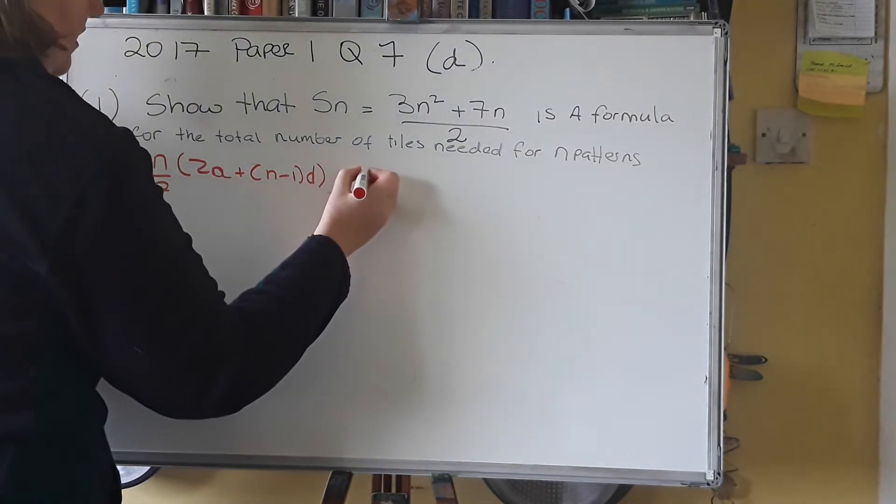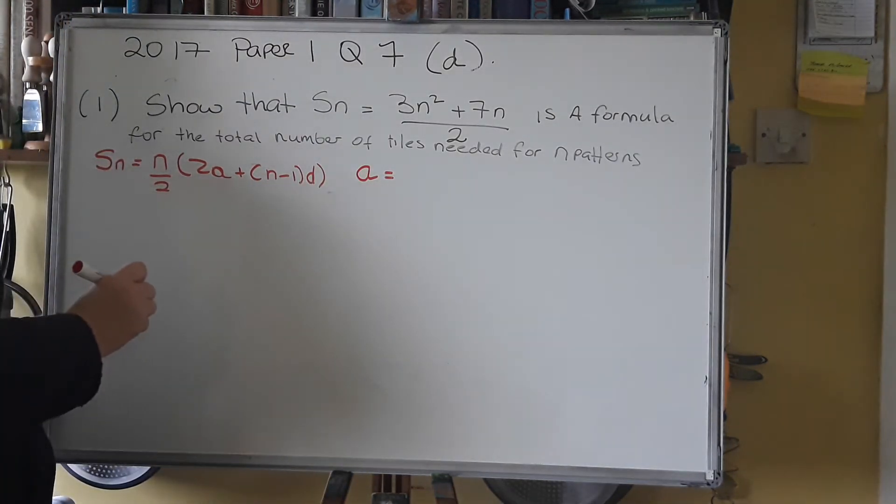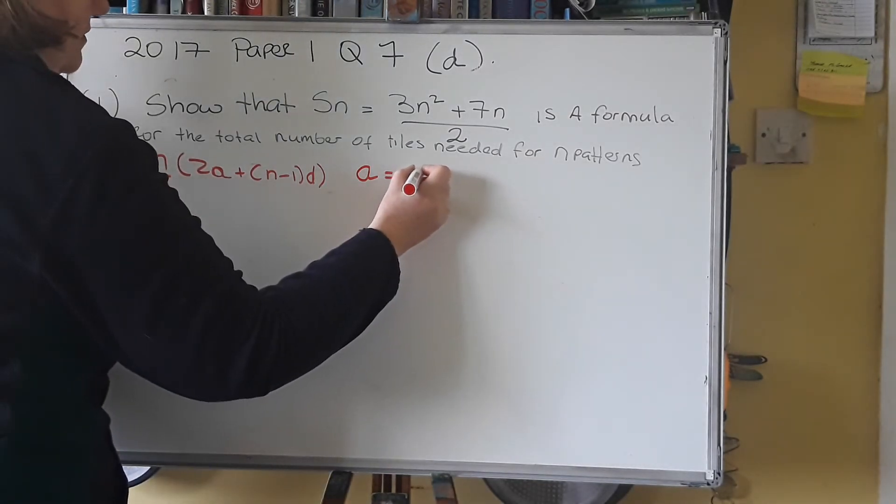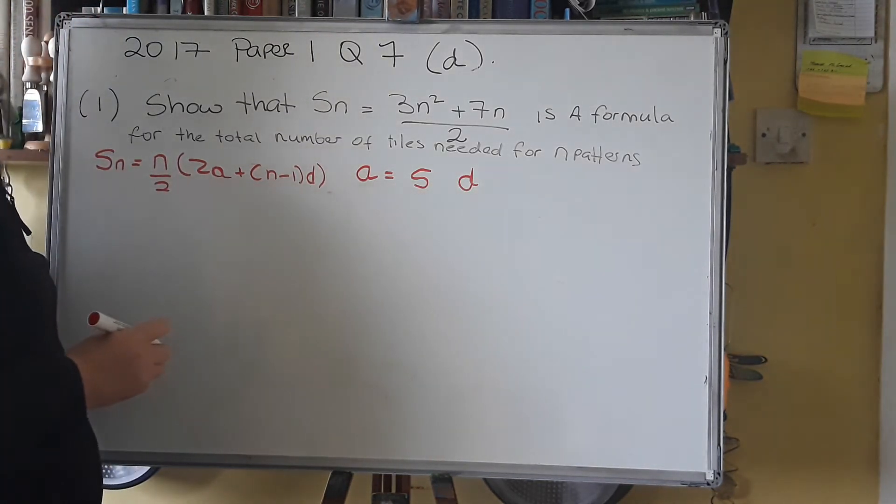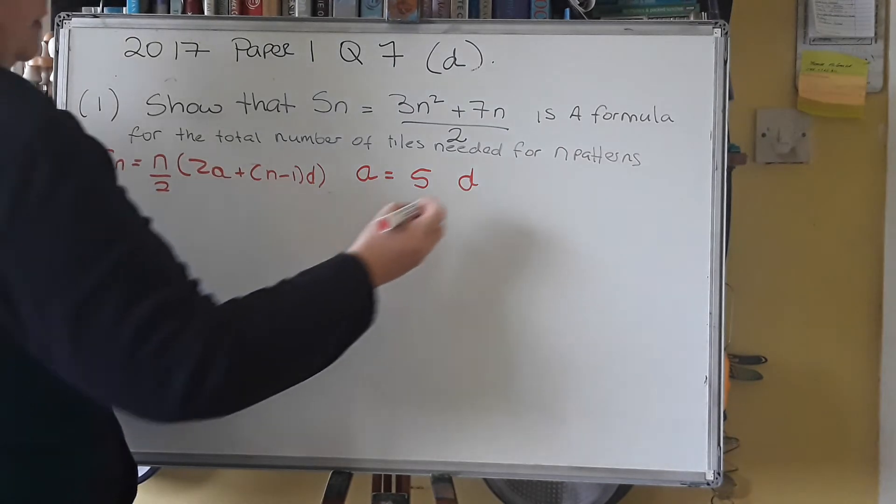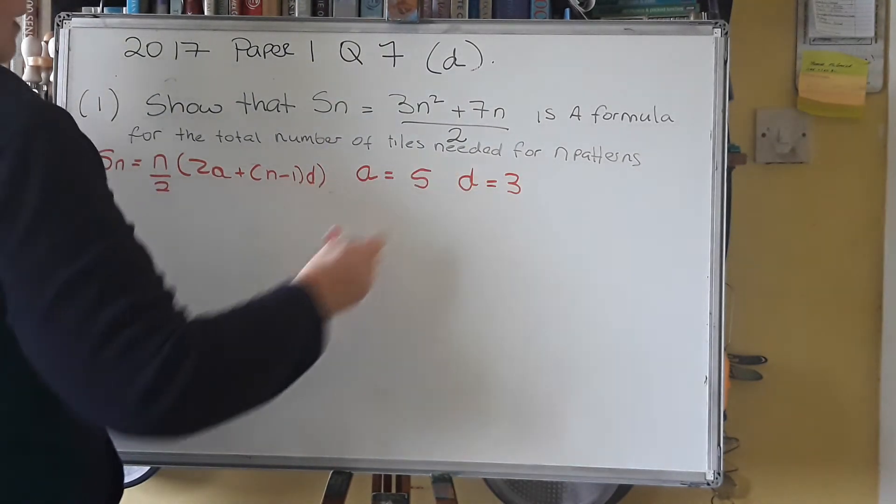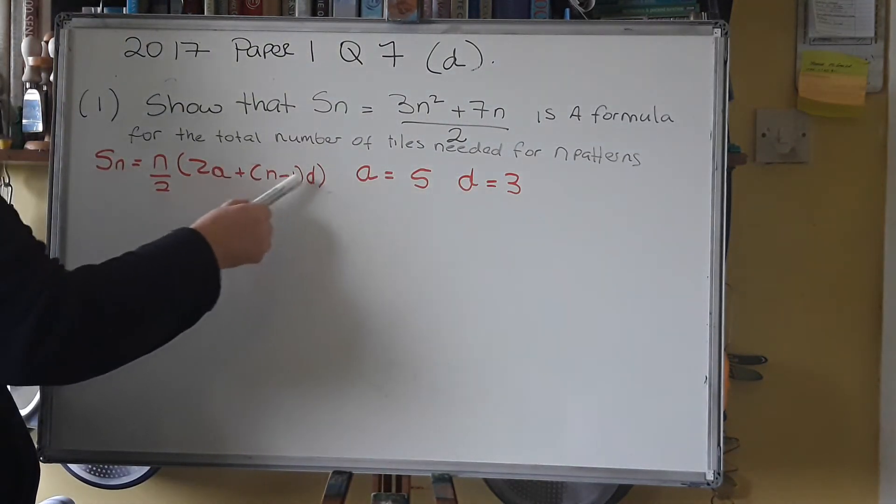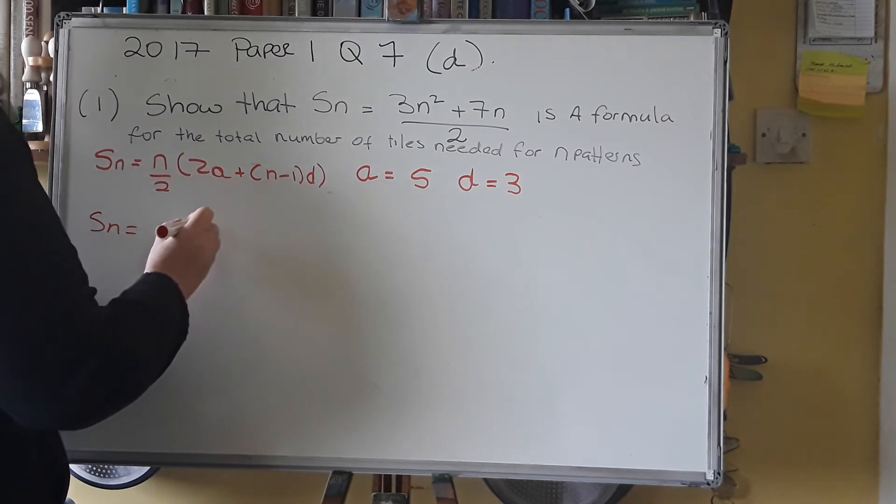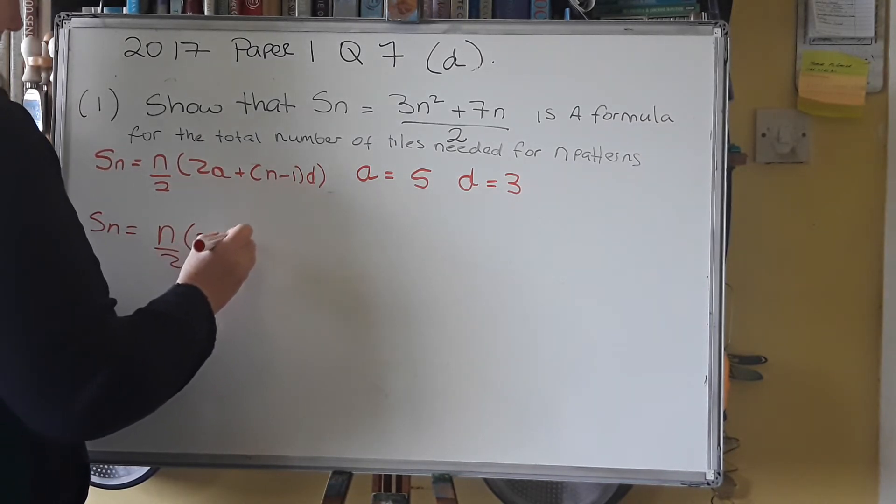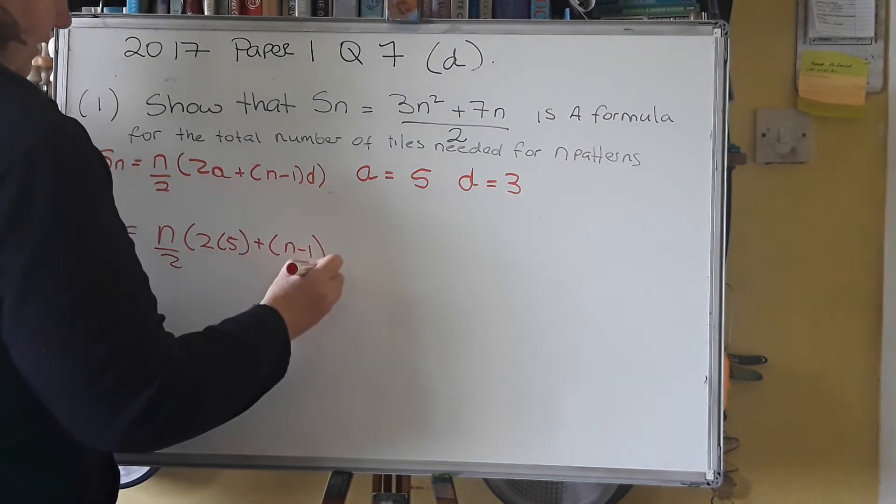So a, what you want for a is how many tiles were in the first pattern. And we know that in the first pattern there was 5 tiles. Then d is how much did the tiles increase by every time. It's called the common difference. And the common difference in this case was each time the tiles increased by 3 tiles. So your a is 5 and your d is 3. So we're going to put those in here now instead of a and d. So Sn equals n over 2 by 2 and instead of a we have 5 plus n minus 1 and instead of d we have 3.